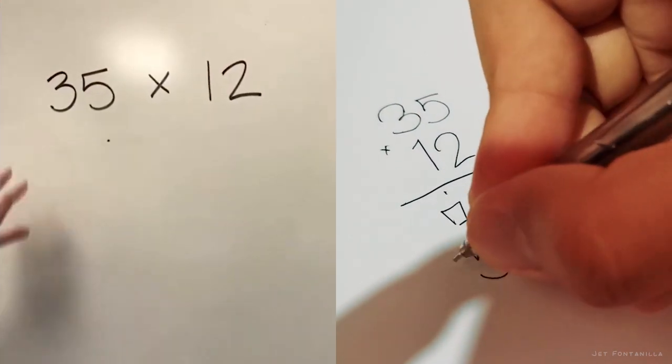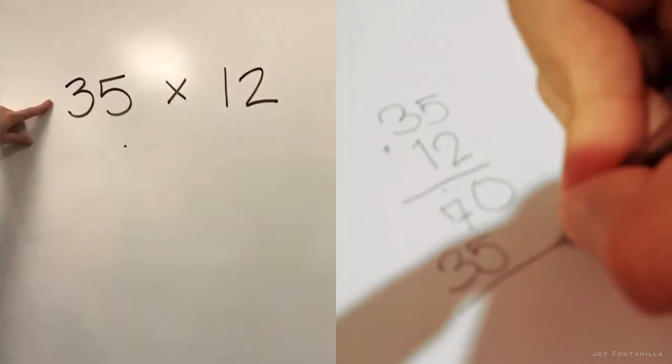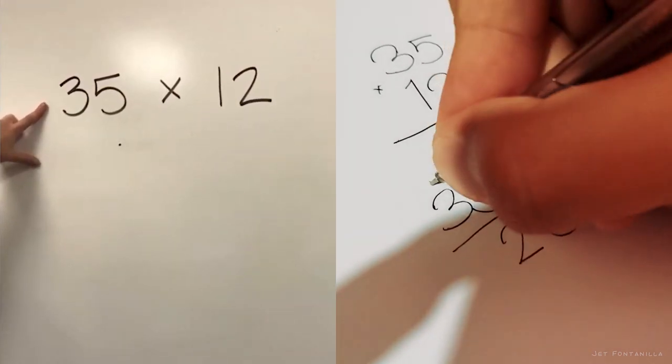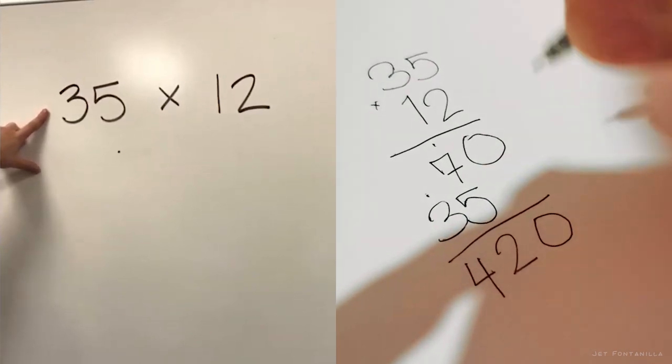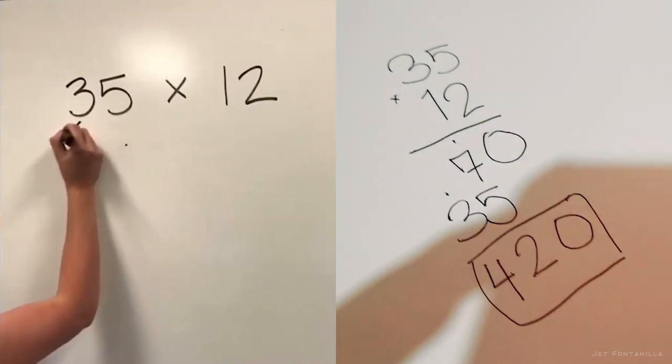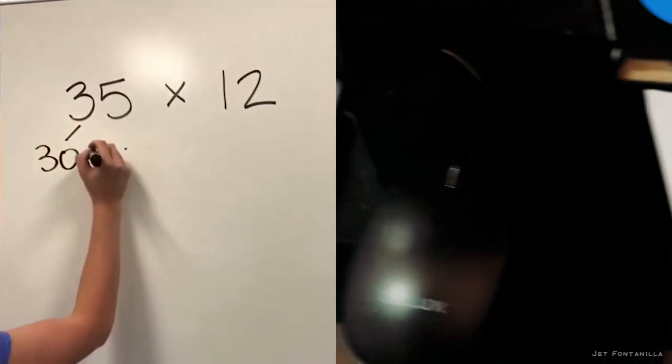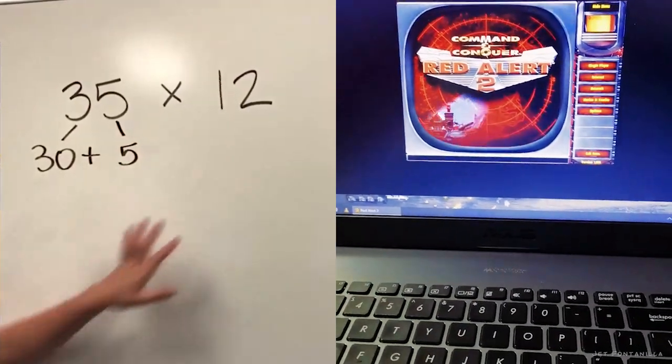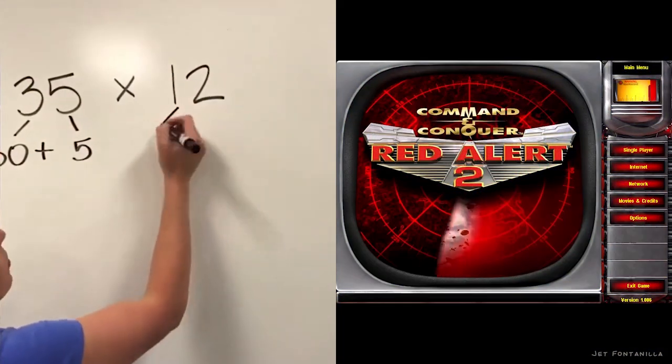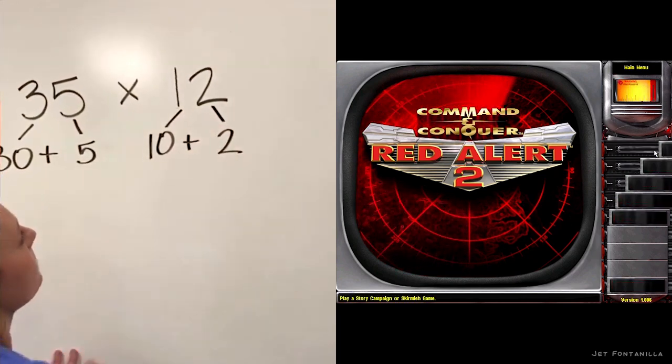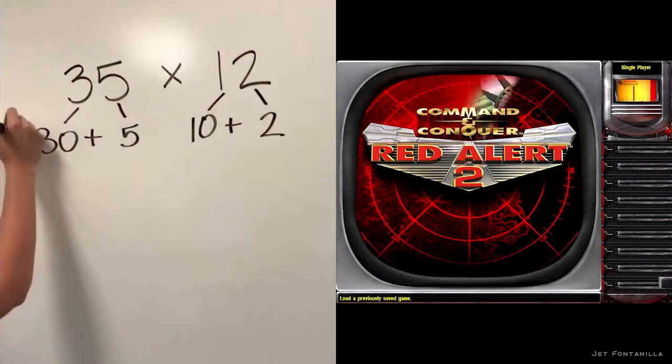So first thing is we have our multiplication problem 35 times 12. The first thing we need to do after that is expand these two numbers. We need to break it down into its tens and its ones. I've got three tens which is 30 and five ones, so that is 30 plus 5. 12 is one tens plus two ones. Okay so that's step one.